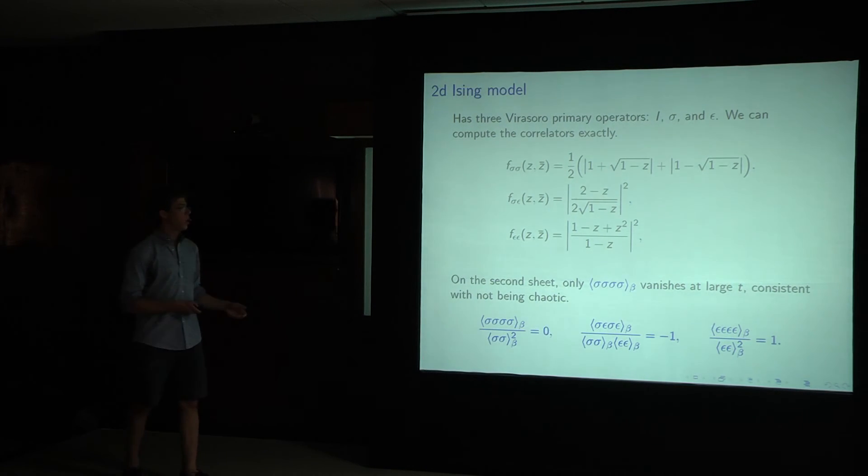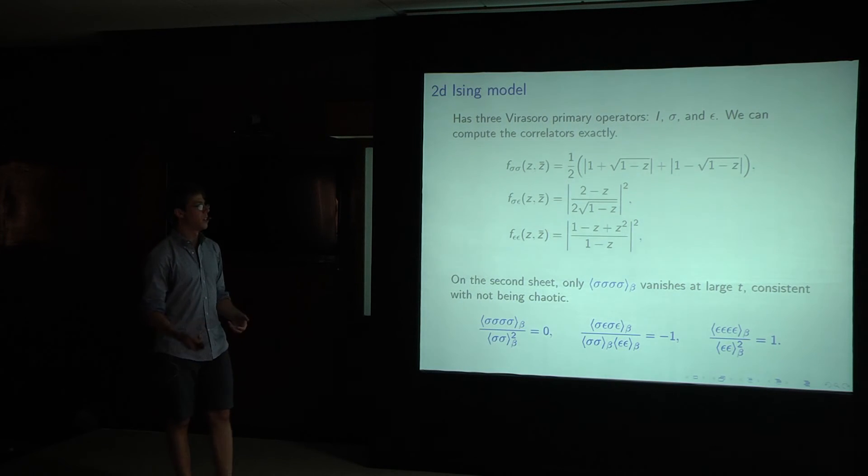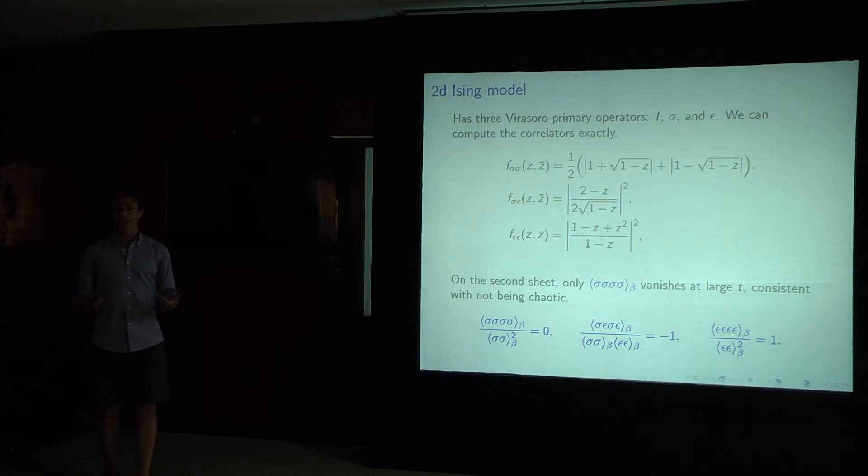And on the second sheet, only this four sigma correlation function vanishes at large t, which is consistent with the theory not being chaotic, which is great because it's integrable.